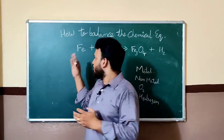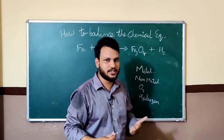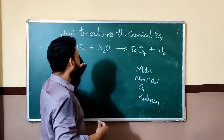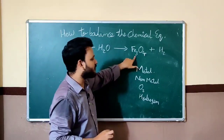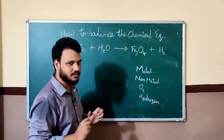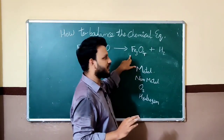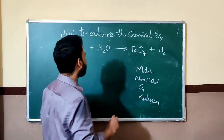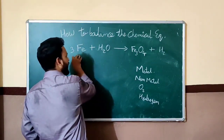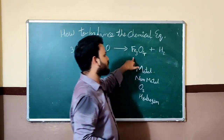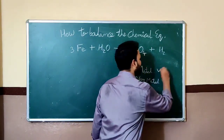You have to make iron equal on the LHS as well as the RHS. Here, iron is only 1, but on the other side the number of iron is 3. So you have to make it balance. We will multiply by 3 here. Now the iron on the LHS is also 3 and on the RHS also 3. The metal is now balanced.